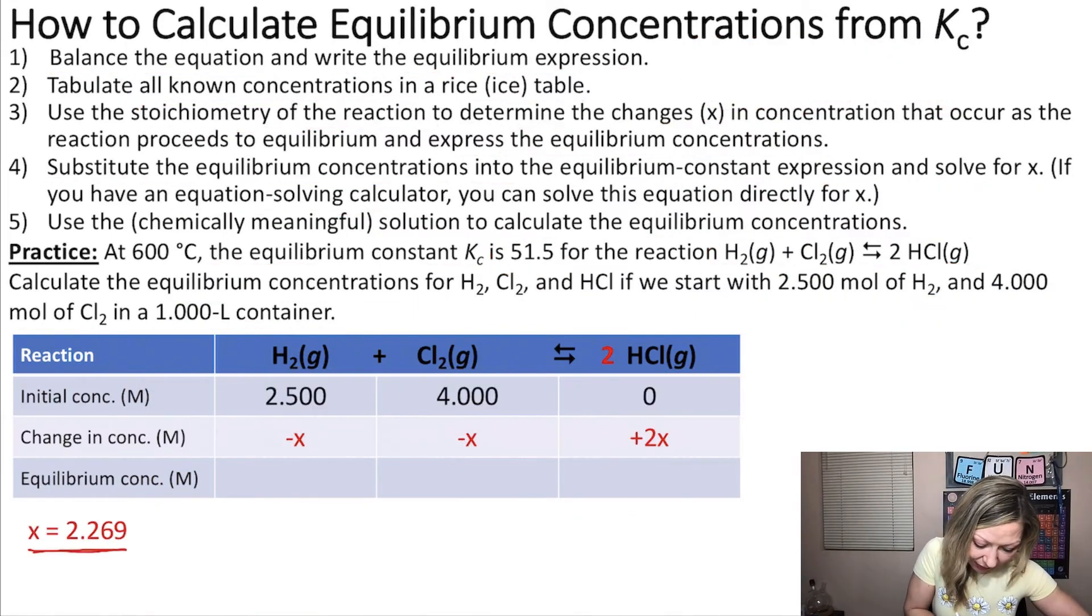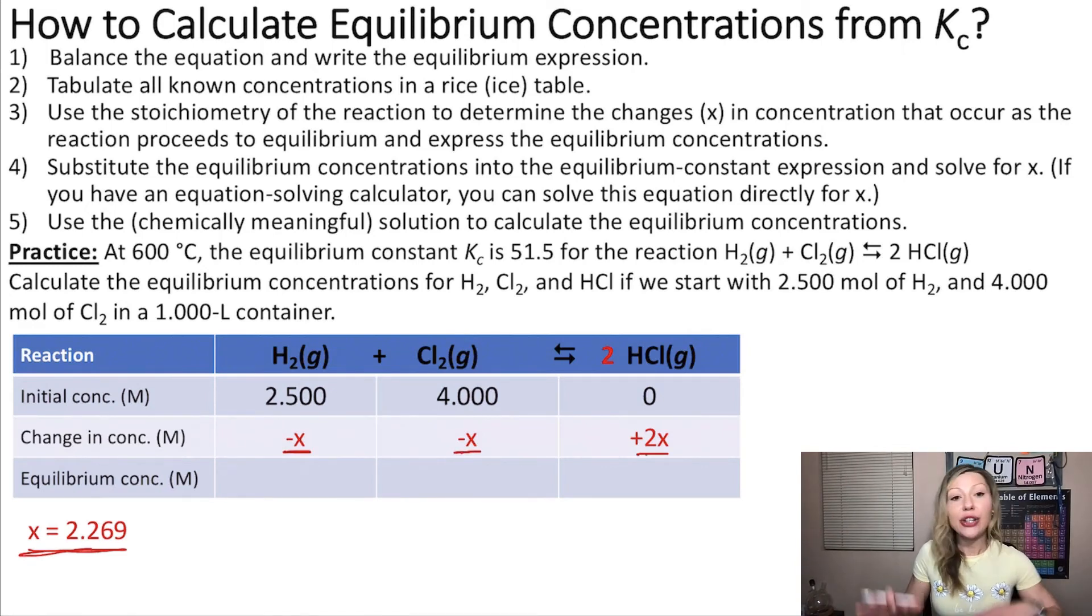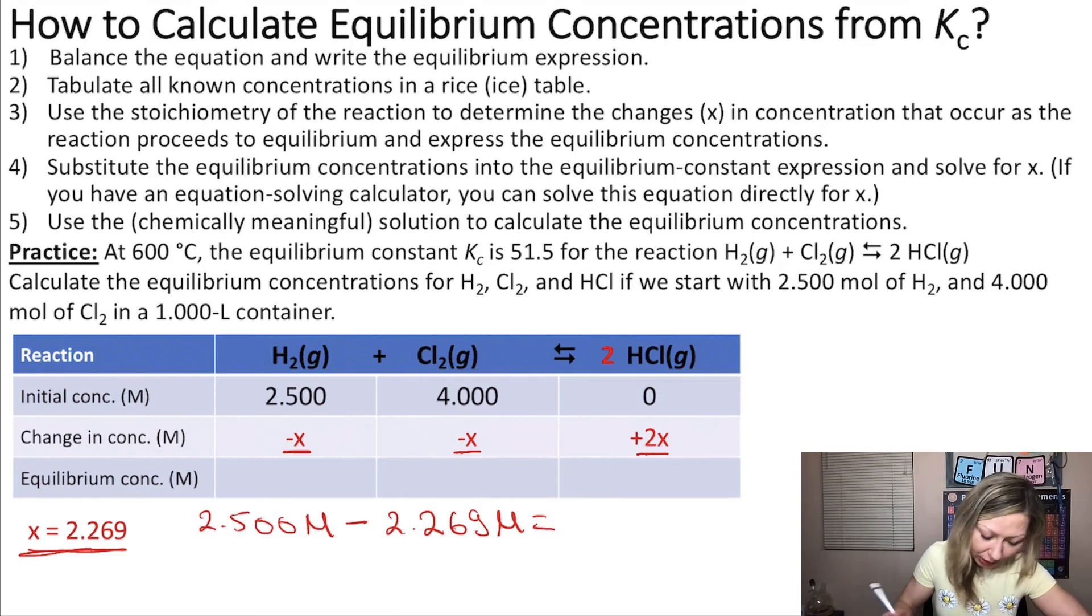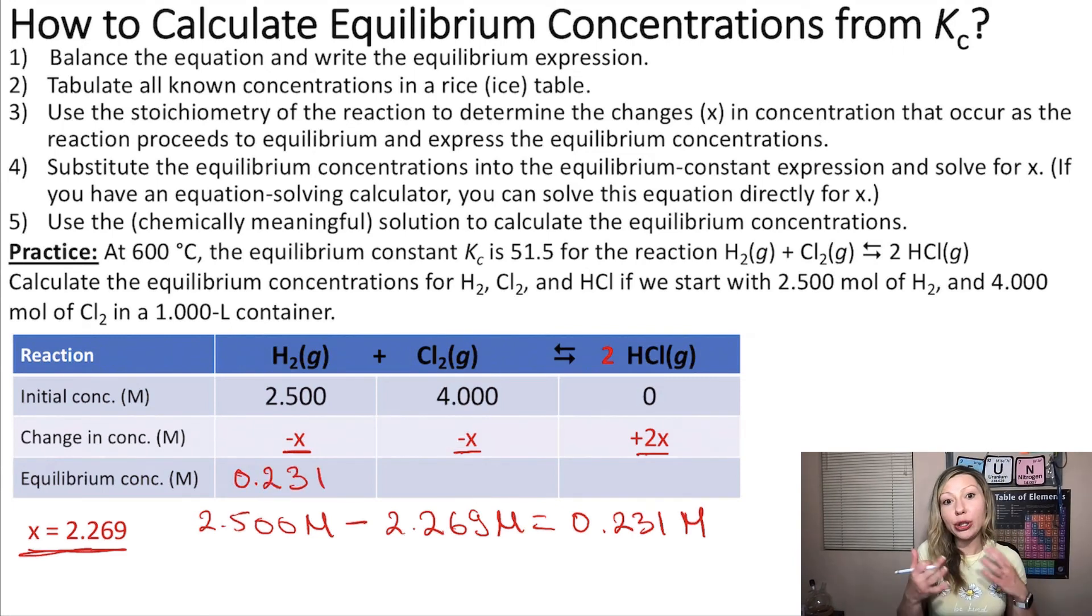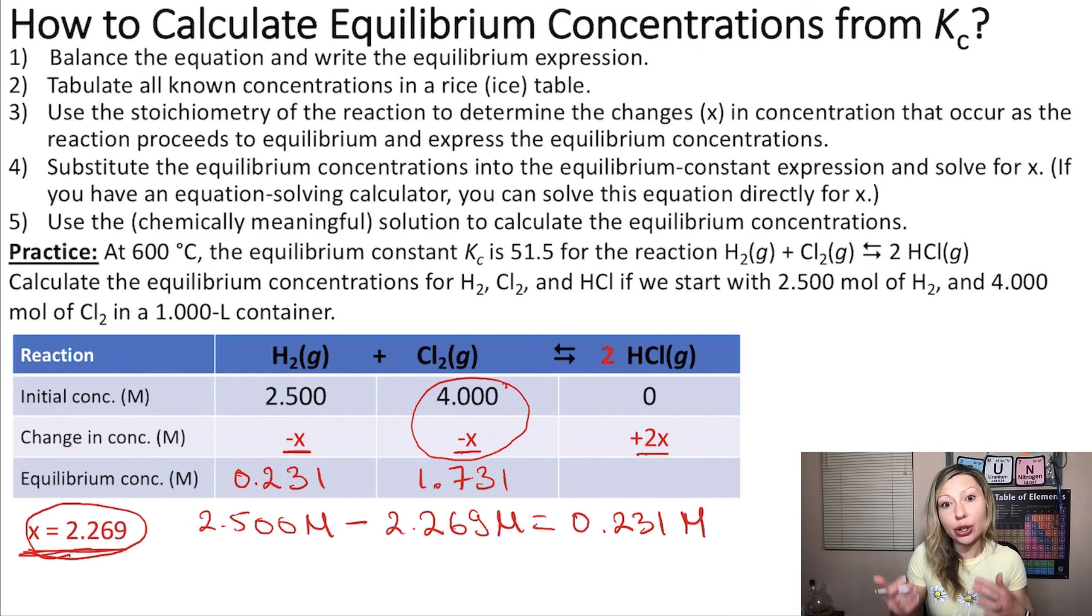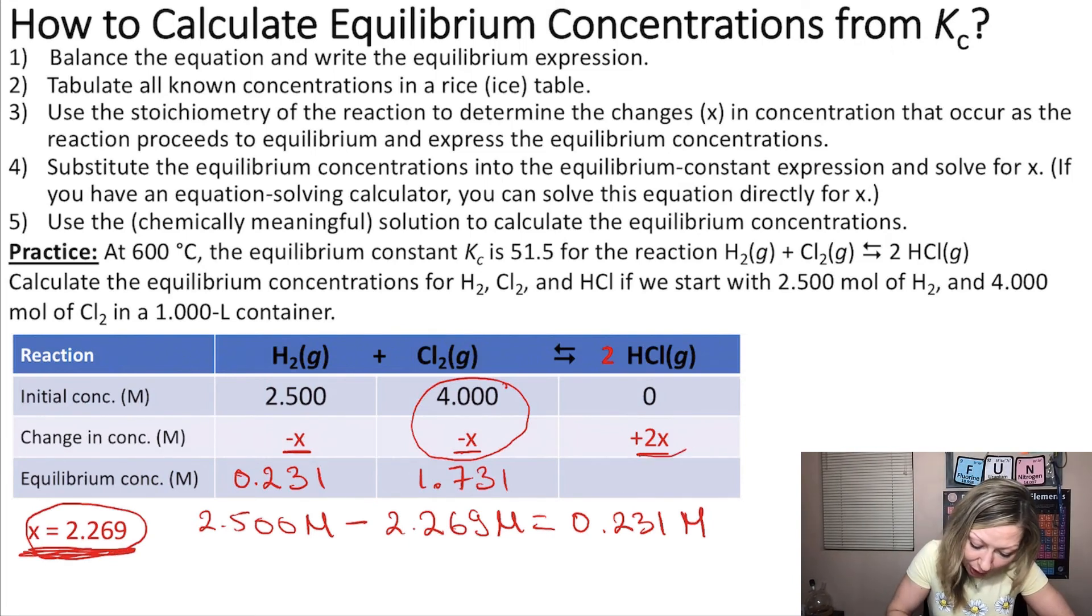So here, I already have my X defined. And I also know the changes right here. So simply, in order to calculate the equilibrium concentration of H2, I'm going to take 2.500 mol per liter, minus 2.269 mol per liter, and I'm going to get 0.231 mol per liter. And I can simply substitute this value right here, so 0.231. I'm going to do that for Cl2 also. So 4 minus 2.269, and I'm going to get 1.731. And then in order to calculate HCl, I'm just going to multiply my X, 2.269 by 2, and add it to 0. And I'm going to get 4.538.